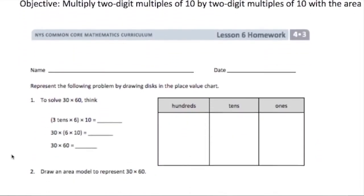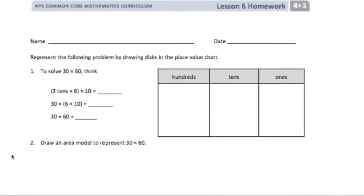My computer is just doing its own thing. All right, 30 times 60. We can think of 30 as three tens. I'm going to do three tens times six, which means I'm going to do this three tens six times. So essentially I'm doing 30 times 60 — I'm doing three tens six times.